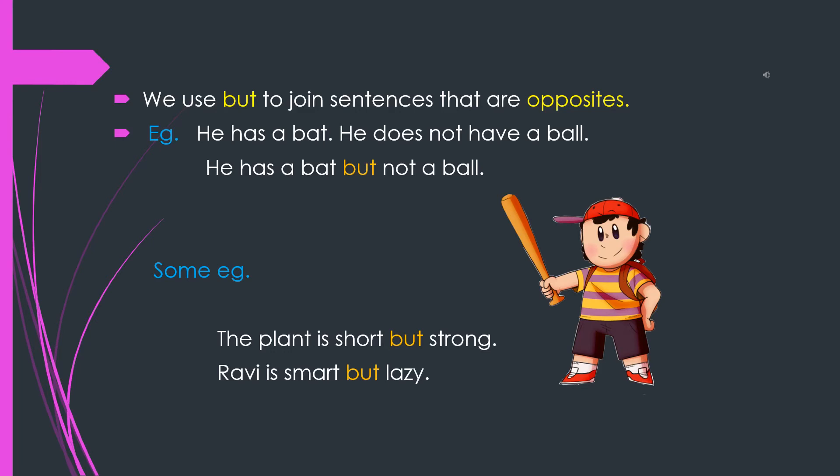Let us see some more examples. The plant is short but strong. Another example: Ravi is smart but lazy.